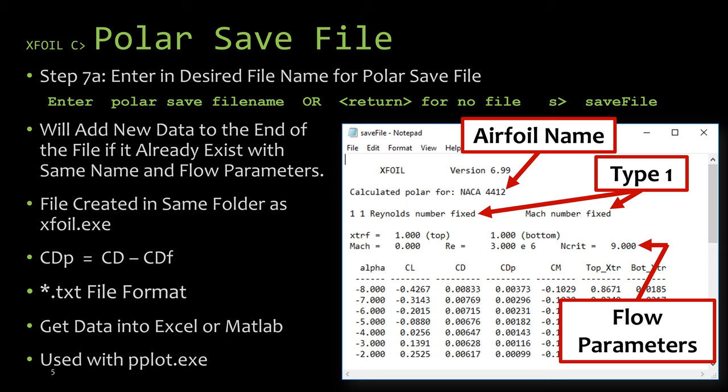The polar save file actually stores two coefficient of drag terms. It has the total viscous coefficient of drag, or CD, but it also has the coefficient of drag due to pressure. You can actually use both of these to determine what the missing coefficient of drag term is. That would be the coefficient of drag due to the skin friction. By remembering that the coefficient of drag due to pressure, CDP, was calculated from the total coefficient of drag minus the skin friction coefficient of drag. You'll also see there the moment coefficient and the transition locations for the upper and lower surface.